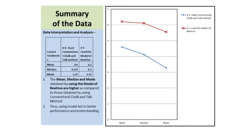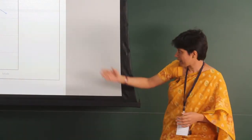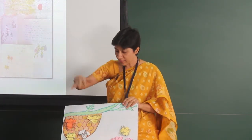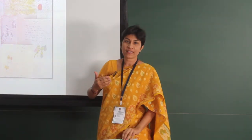Mean, median, and mode were also calculated. In all three measures, the results were found to be higher when the model of the beehive was used. The graph gives a clear picture — when the model was used, performance was much better, compared to the blue which represents students taught by the conventional method. The conclusion is that the model helped in better understanding, increased the curiosity of students, and they drew pictures, asked about career options, touched the model, moved the bees, drew their own inferences — it was fun and learning by doing.